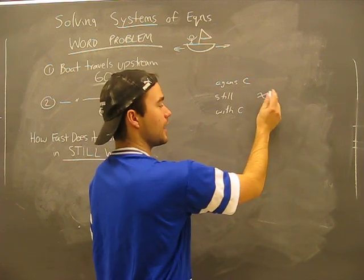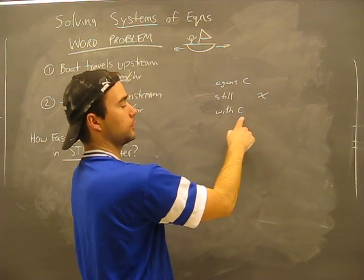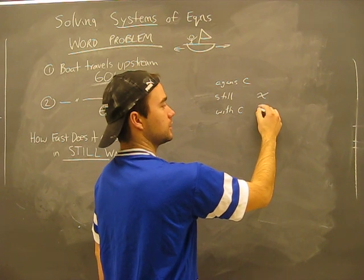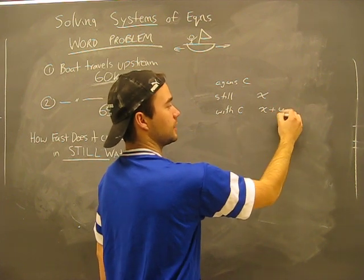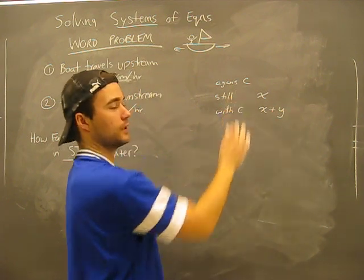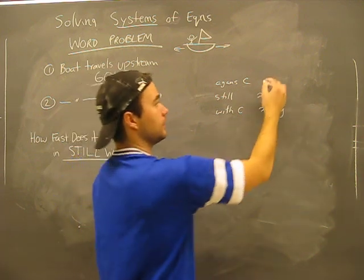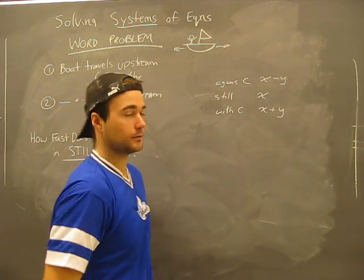If we call this x, our speed of x, if we're going with current, our speed would really be like this, x plus something. If we're going against current, our speed would really be x minus something.